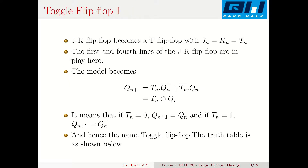A JK flip-flop becomes a T flip-flop with Jn equal to Kn equal to Tn. If J and K are shorted, this uses the first and fourth lines of the JK flip-flop truth table — that is, for J equal to K equal to 0 and J equal to K equal to 1. With Tn equal to 0, Qn+1 is Qn, and with Tn equal to 1, Qn+1 is the complement of Qn, that is Qn+1 equals Qn-bar.